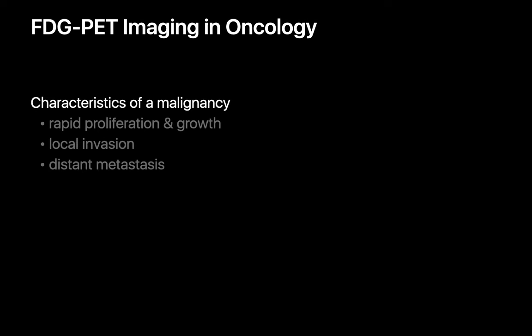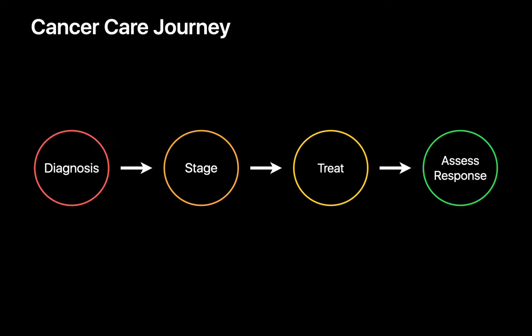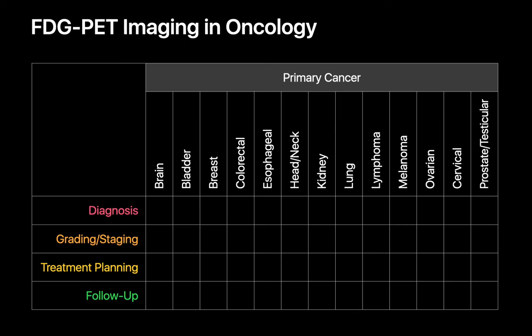In oncology, PET imaging using FDG is an extremely useful tool for spotting one of the common traits of cancer — rapid cellular growth — which is often associated with abnormally elevated glucose utilization. There are several phases in a patient's cancer care journey: diagnosis, staging, treatment, and assessing treatment response. PET imaging may routinely be involved in one or more of these phases depending on the specific malignancy.